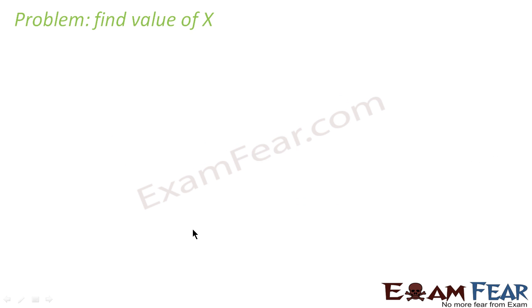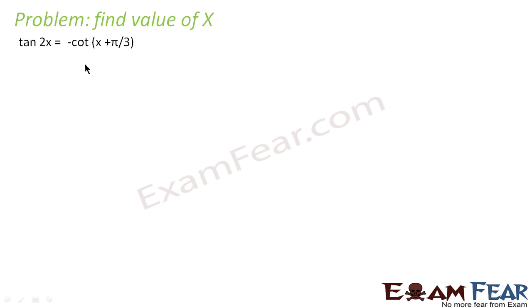It's a common problem where we have to find the value of x. We are told that tan 2x is equal to minus cot(x + π/3). We have to find tan 2x. Now if you can convert this also to tan, you can directly equate the values.